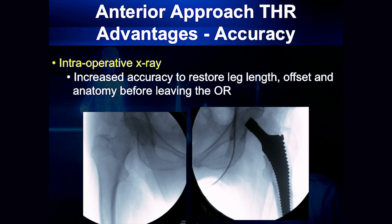What we're doing is comparing it to the other hip to essentially gauge our leg lengths as well as what we call the offset of the hip. By doing that, a lot of times we're increasing the accuracy.